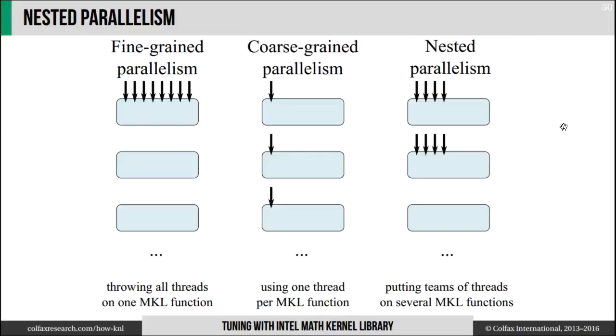For this example, I will use a calculation that performs fast Fourier transforms on multiple relatively small arrays. Specifically, I will transform arrays of size 2048, and I will have a lot of arrays, something like hundreds of thousands.